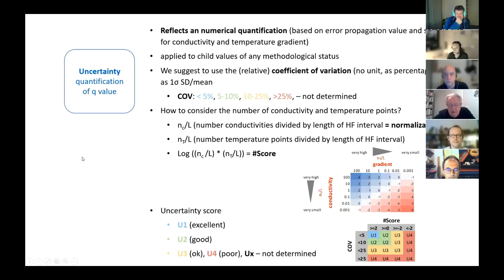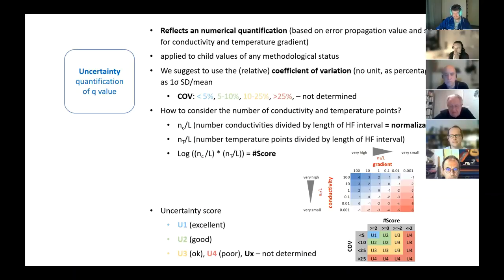A practical question: when applying this approach, we calculate the score numerically and then look it up in the table — but the result won't be a clean integer like 1 or 10. For example, the ratio we get for the gradient might be around 5, and then we round it, perhaps to 10 on the logarithmic scale. How were you thinking about that?